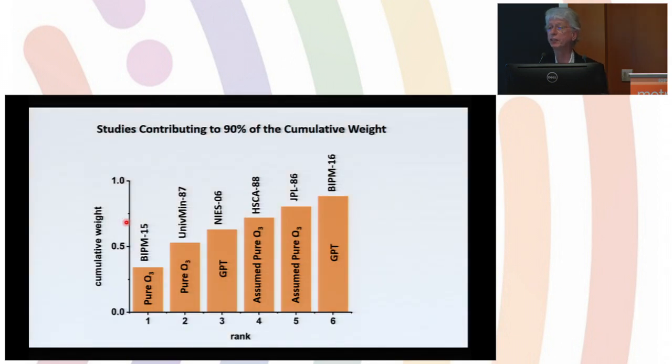In the final analysis, 90 percent of the weight could be attributed to six of these studies. We did not throw out any data—all 14 studies contributed, but these are the six that contributed most. These include the measurements done here at BIPM reported in 2015 on pure ozone by Joelle Viallon. Those measurements had the lowest uncertainty and therefore the highest weight. There were two sets of measurements based on gas phase titration.